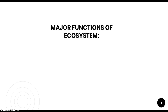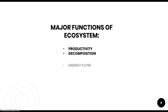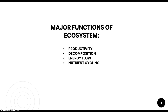After this, we need to know the major functions of the ecosystem. There are four major functions: first, productivity; second, decomposition; third, energy flow; and fourth, nutrient cycling. We will discuss all four of these one by one.